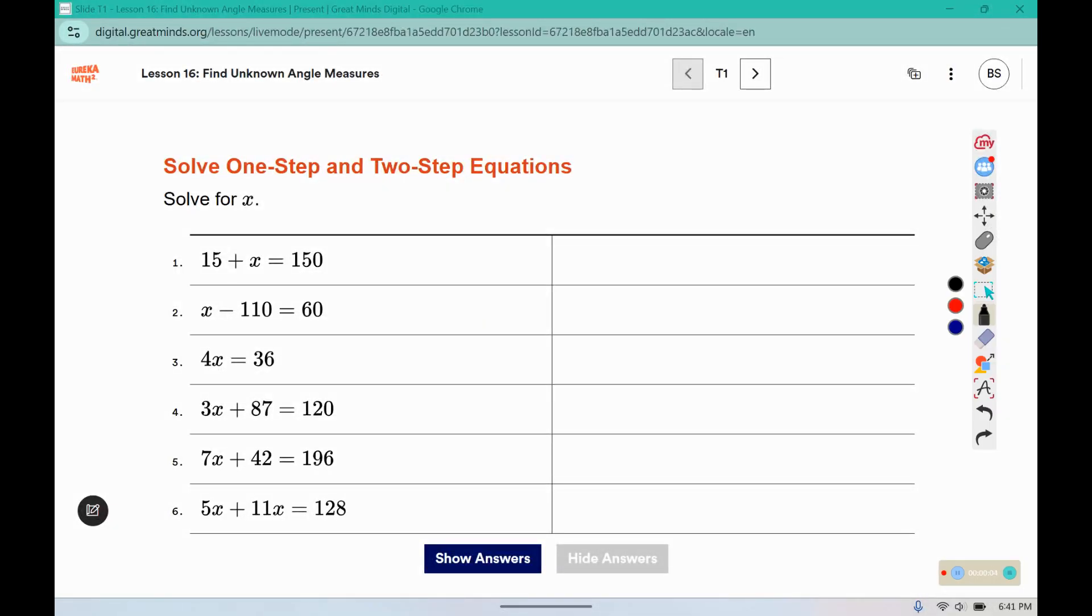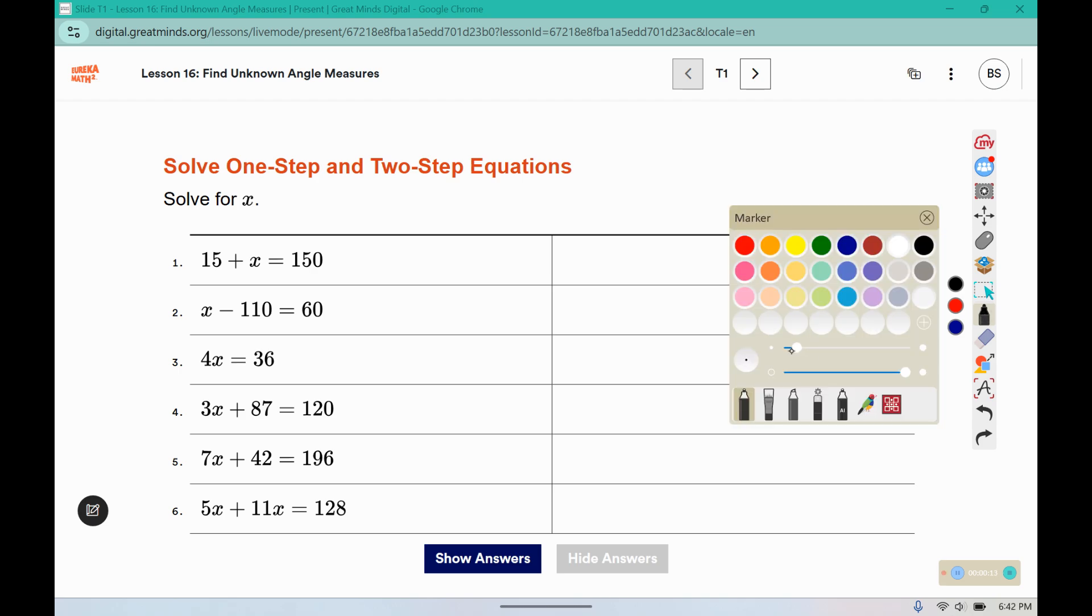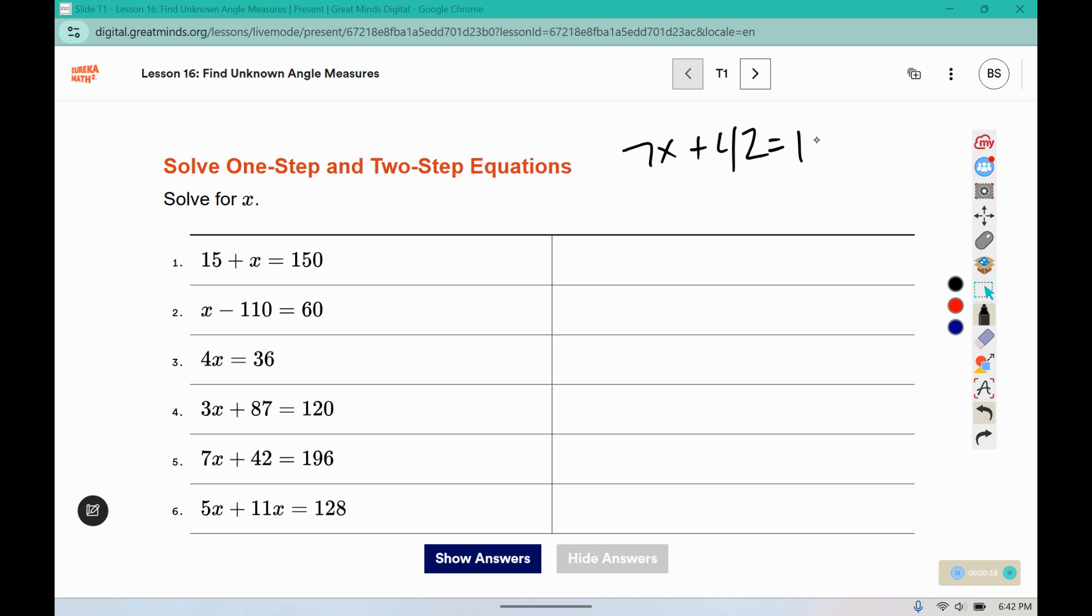Welcome back. I'm going to solve two of these as a sample, number 5 and number 6. So for number 5, I have 7x plus 42 equals 196. I draw this line in the middle just to help me remember when I'm moving things to the other side, I need to flip it over. So positive 42 becomes negative 42, and I'm moving numbers with my numbers and leaving my variables by themselves.